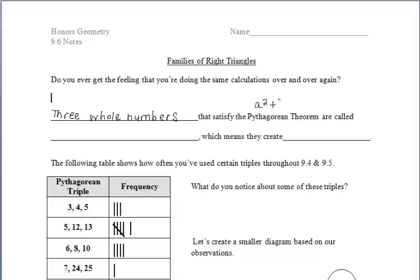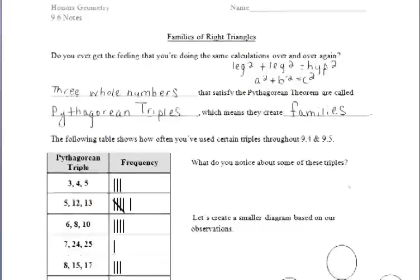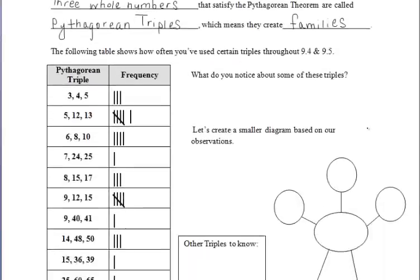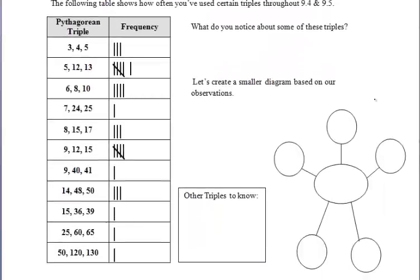Three whole numbers that satisfy the Pythagorean Theorem — which we know as a squared plus b squared equals c squared, or leg squared plus leg squared equals hypotenuse squared — are called Pythagorean triples, which means that eventually they'll create some families.